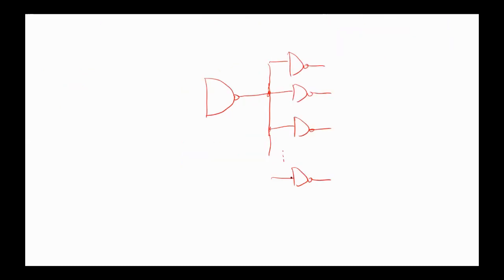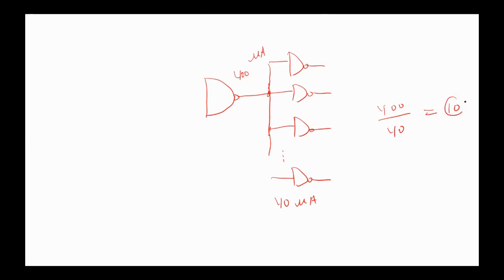To find the fan-out, for example in standard TTL, we have 400 microamperes output current, and the minimum current value for each input is 40 microamperes. So if we divide 400 by 40, the number of gates a single gate can feed equals 10 — and this is the fan-out in standard TTL logic family.